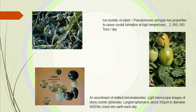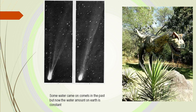Two million tons a day of this bacteria go up there and can cause rain. The bacteria wants to get back to the Earth. It causes crystallization — the crystals form a type of snow, which then, depending upon the temperature, falls as either snow or rain. The water amount is fairly constant on Earth. In the past, some of that water came on comets, and some people say that most of our water came from comets.